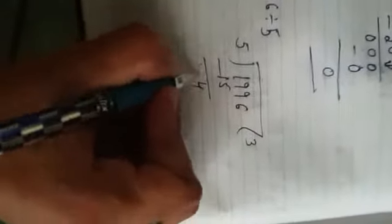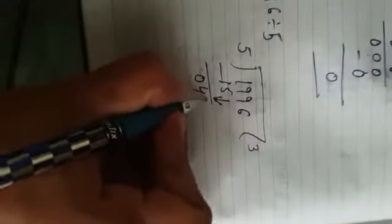The next sum is 96 divided by 5. 1 is smaller than 5. Then you are allowed to take the first 2 digits of the dividend. 5 threes are 15. 9 minus 5 is 4. 1 minus 1 is 0. Again 9 here.